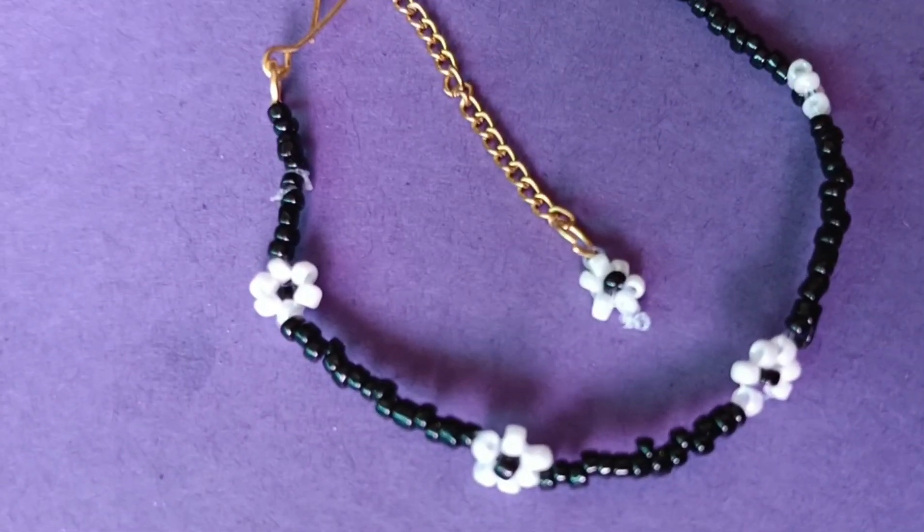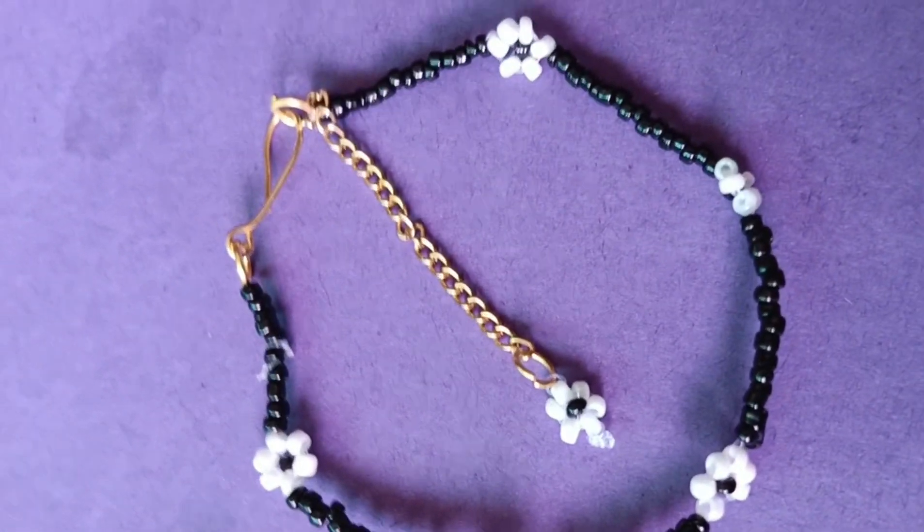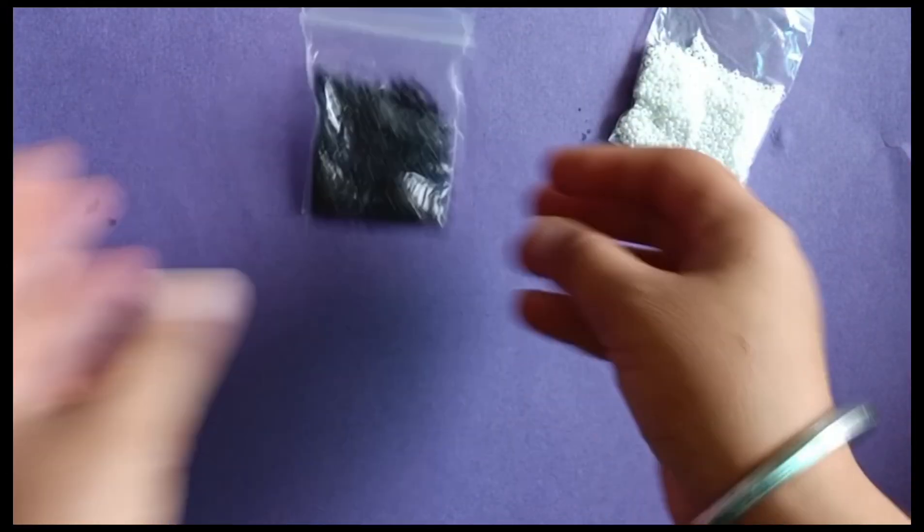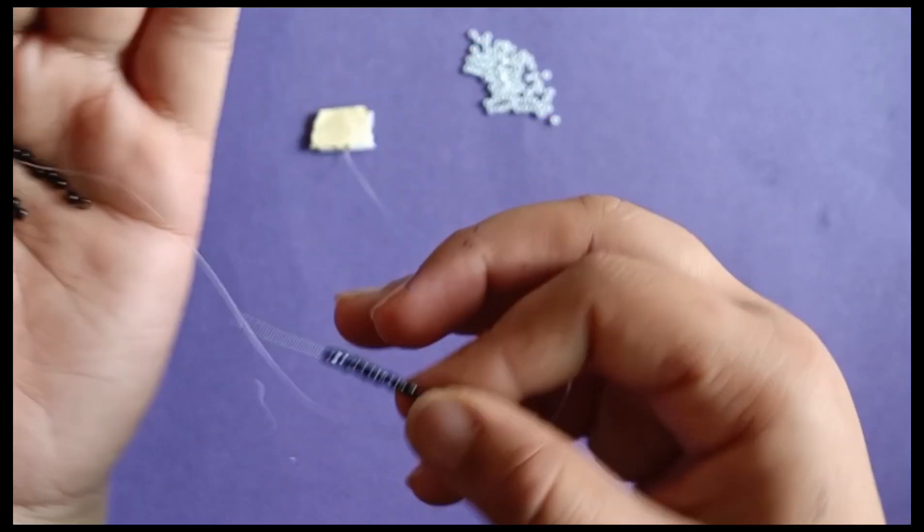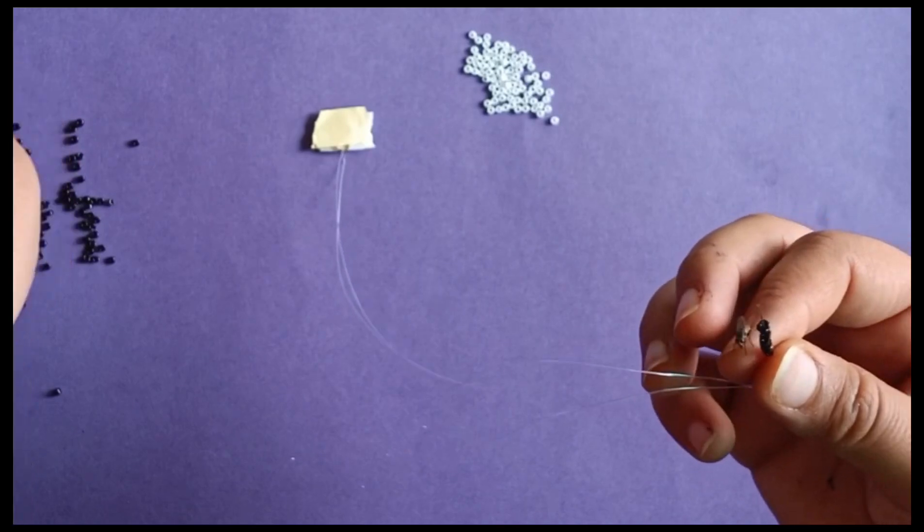Now we will make this bracelet, which is my second bracelet, which we can wear in the back and in the front. Let's start with this. First, I have taken the seed beads and then I have inserted three seed beads.